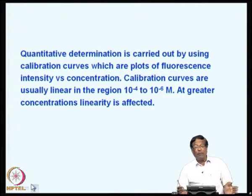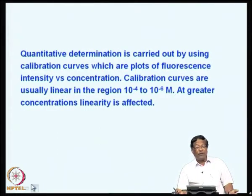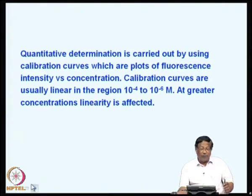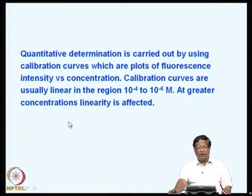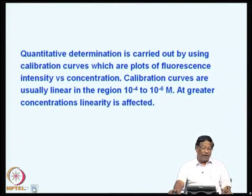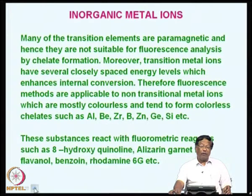Quantitative determination can usually be carried out using calibration curves, just like in spectrophotometry — these are plots of fluorescence intensity versus concentration. Calibration curves are usually linear in the range of 10⁻⁴ to 10⁻⁶ molar. At greater concentrations, linearity would be affected, and you should not be working where linearity is compromised because of the difficulties in reproducing the fluorescence measurements.